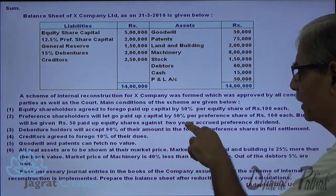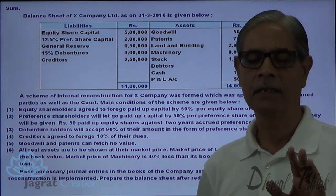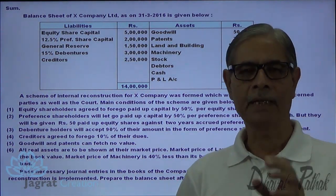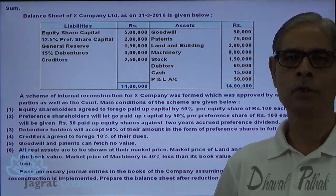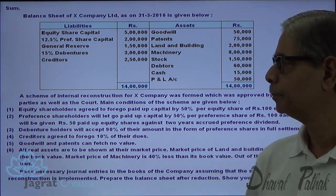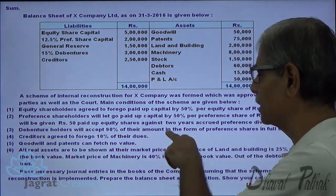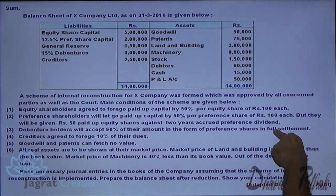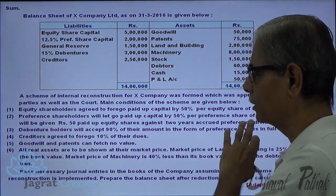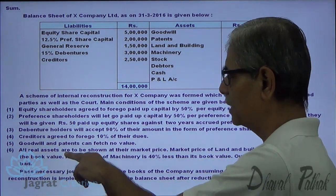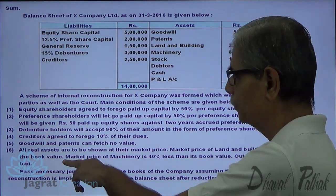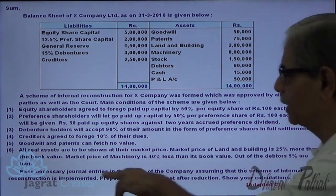Remember that the face value of the share does not change, but the paid-up value of the share changes. When only the paid-up value changes, the face value remains the same, so the company can ask for call money to the extent the paid-up value has declined. Debenture holders will accept 90% of their amount in the form of preference shares in full settlement. Creditors agree to forego 10% of the dues. Goodwill and patent fetch no value. All real assets are shown at market value — land and building is 25% more than book value, machinery is 40% less than book value, and 5% of debtors are bad.